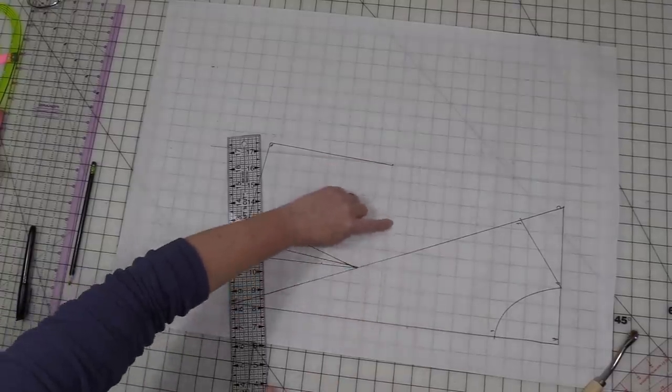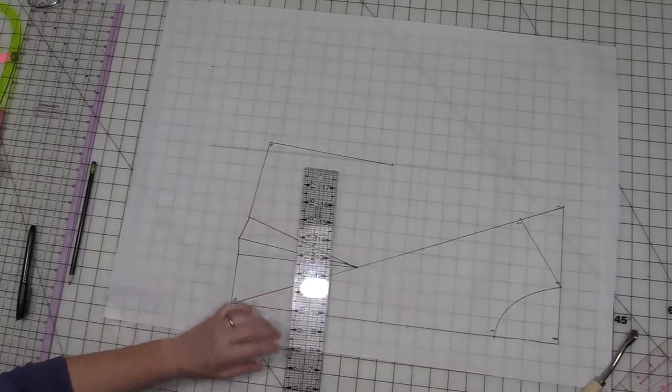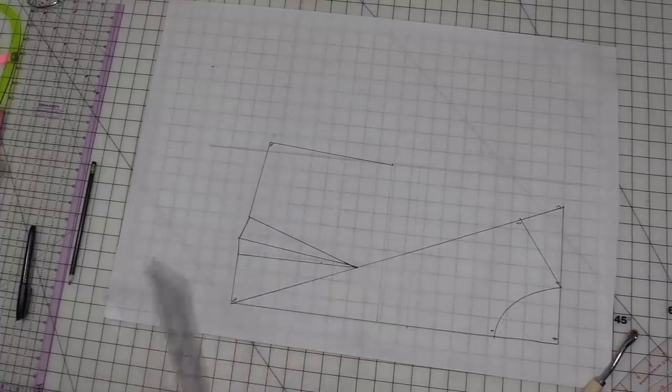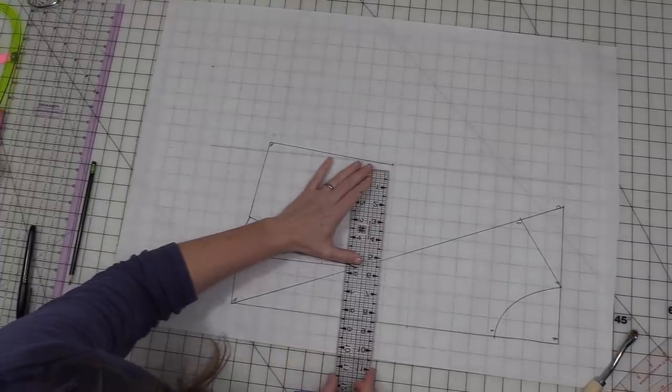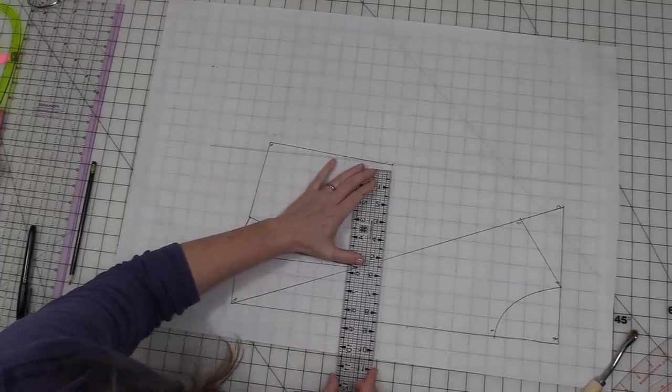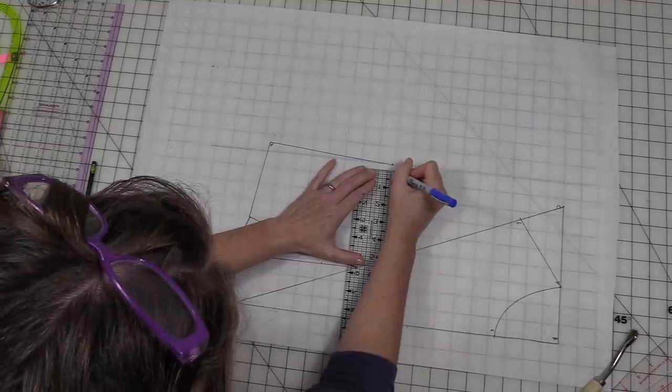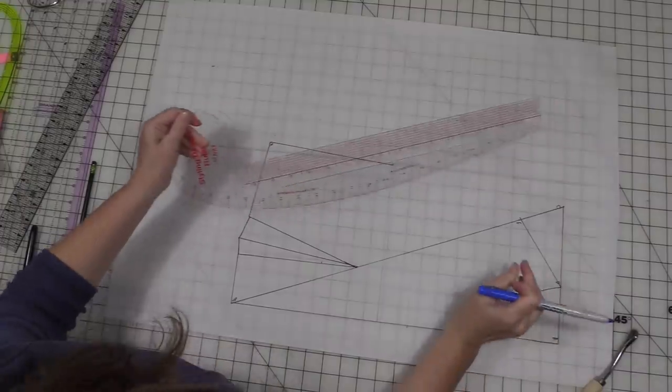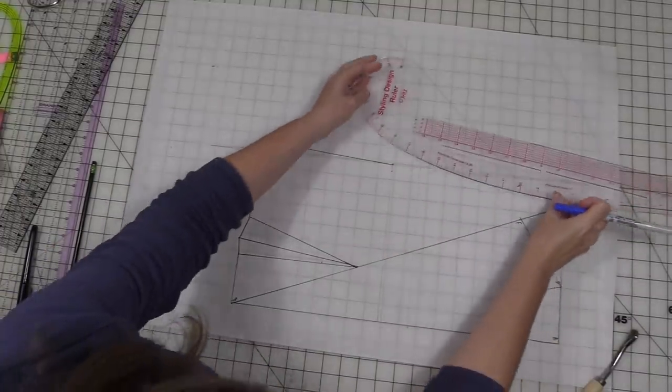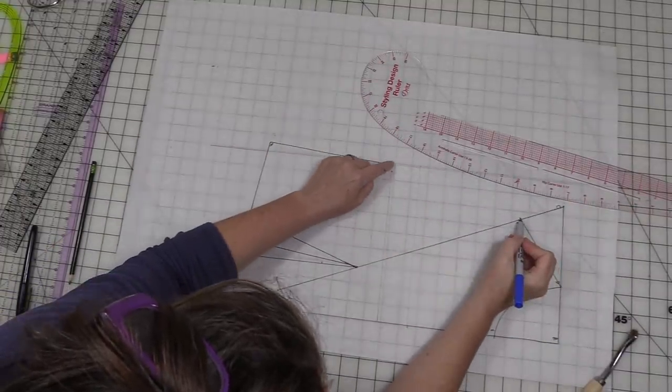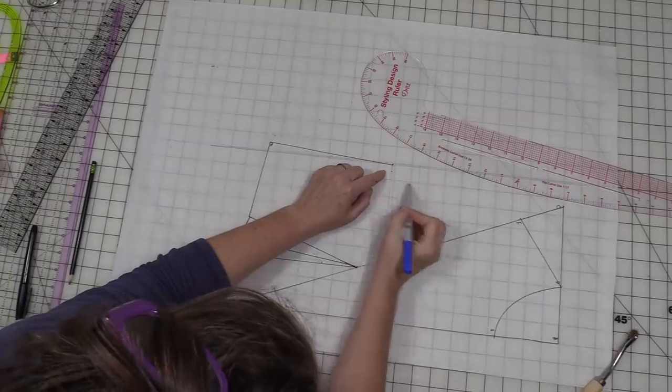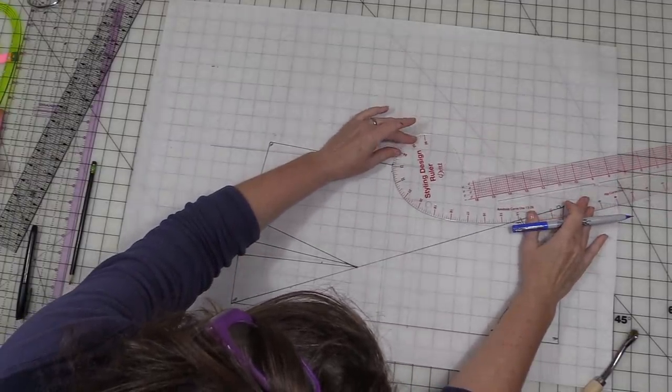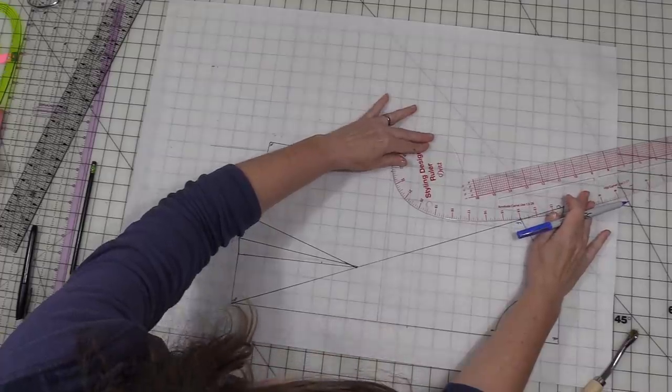Now on this line that we made we're going to take our quarter high bust measurement and mark. On this line for me that was eight and a half and we're just going to make a little dot right there and we're going to use that as a guide. Now we're going to be making a mark from here to here and it's going to intersect here just a bit and that's going to be for our armhole.